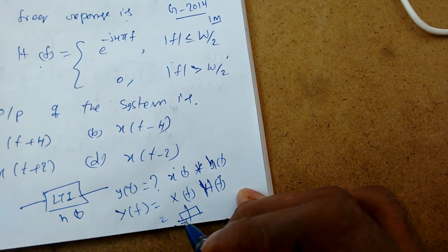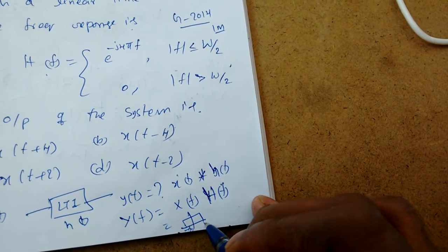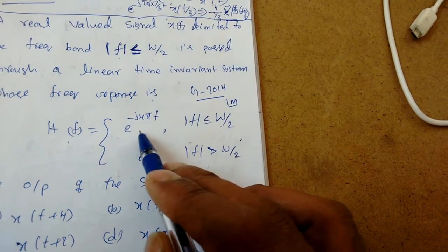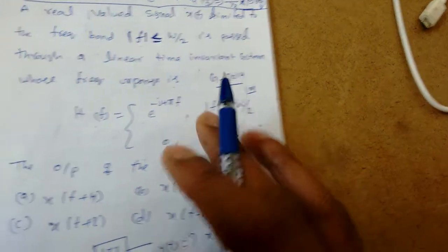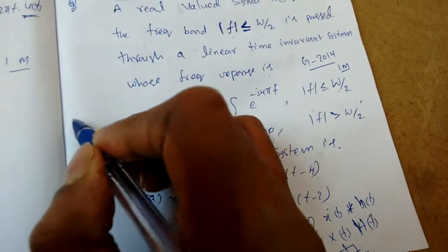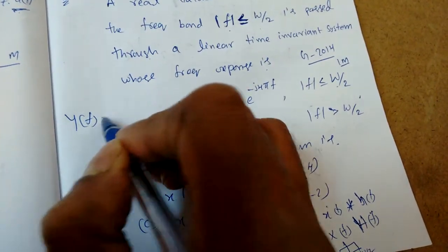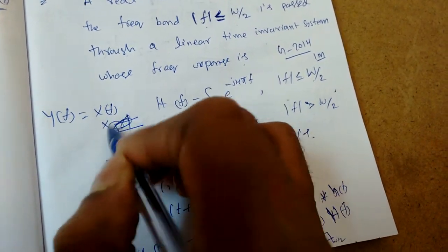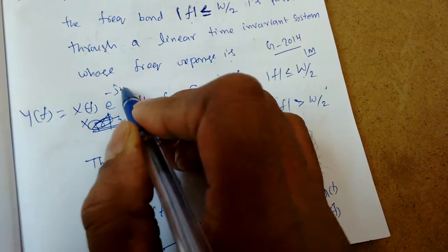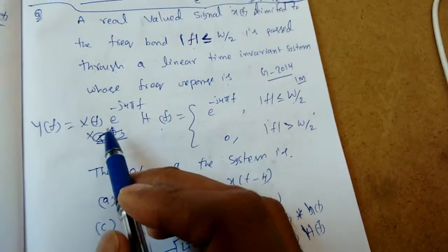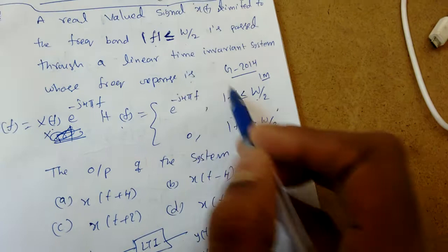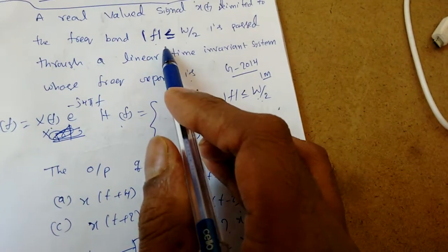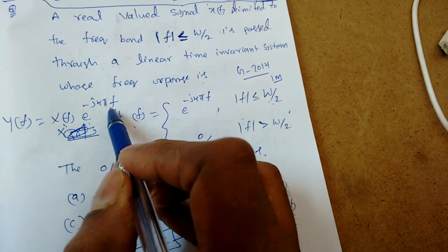So we work over −W/2 to W/2. And H(f) is also given over −W/2 to W/2; it equals e^(−j·4πf). Now Y(f) = X(f) · e^(−j4πf). Since both are band-limited to the same limits, the multiplication also gives the result over −W/2 to W/2.